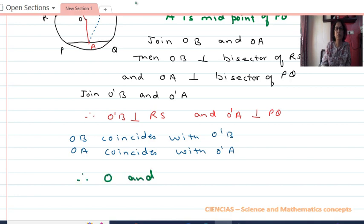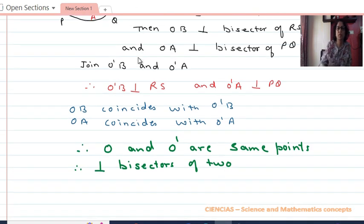O and O dash are same points. Therefore, perpendicular bisectors of two chords intersect at the center of the circle.